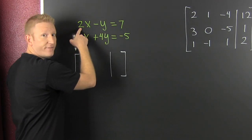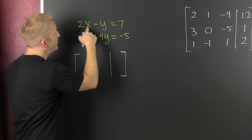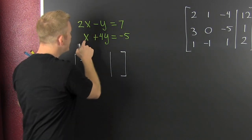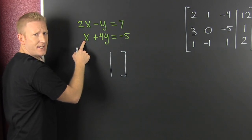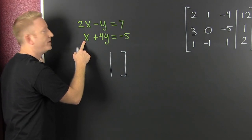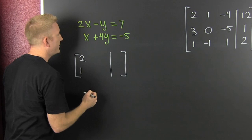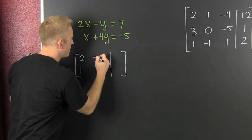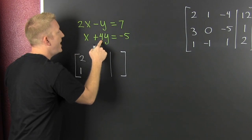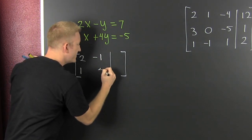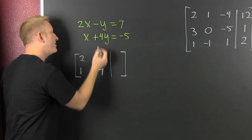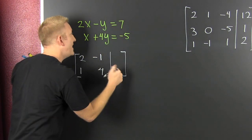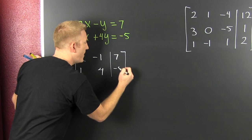So now I'm going to write the coefficients in here. Since there's a 2 in front of the x, in my x column I'm going to put a 2. Just under that, the coefficient is 1, so we put a 1 right there. Coefficient here is minus 1, and then the coefficient there is 4. So I have a column for my y's and a column for my x's. Now all I have to do is put my answers in there — there's a 7 and a minus 5.